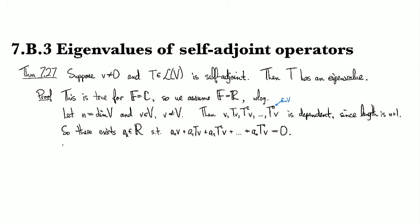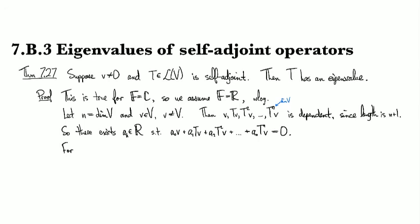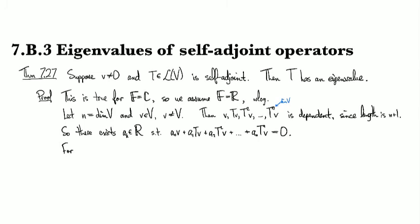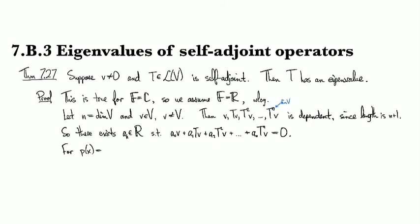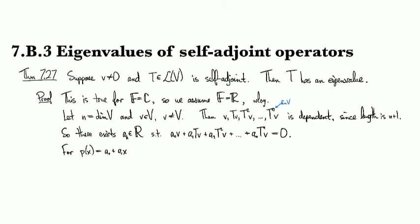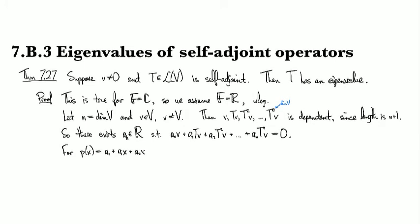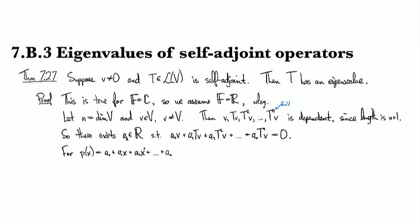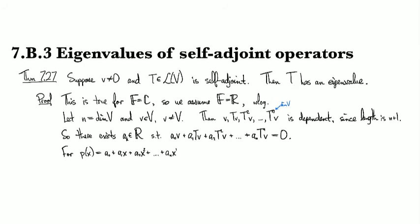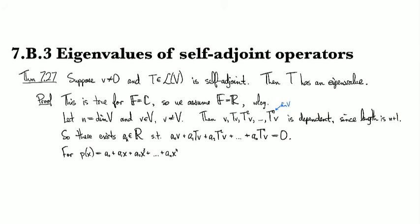So now if we consider the corresponding polynomial that we've basically just generated here, so if we look at p(x), which is a_0 plus a_1 x plus a_2 x squared up to a_n x to the n, so here's some polynomial.